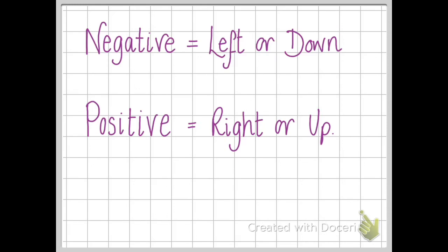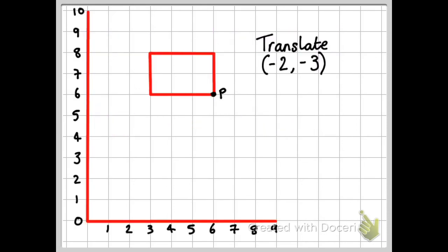And I'm just going to come back to this. Now this first question here asks me to translate this shape minus two, minus three. And it's actually talking about this vertex here, and it's labeled P. So I need to find where P will be after it's been translated.